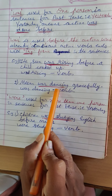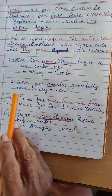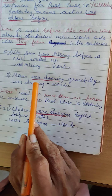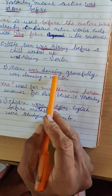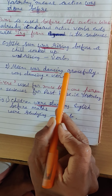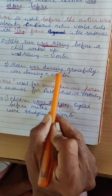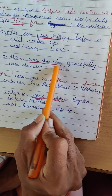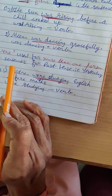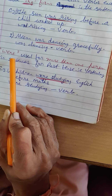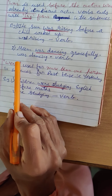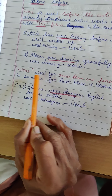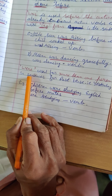Meena was dancing gracefully. What is the verb here? Was dancing — helping verb 'was' and action verb 'dance' in the -ing form. Verbs end with the -ing form. Was dancing is a verb. For more than one person we use the word 'were', W-E-R-E. Were is used for more than one person.